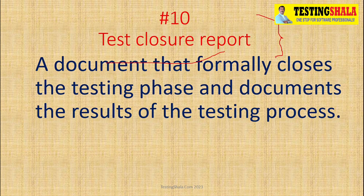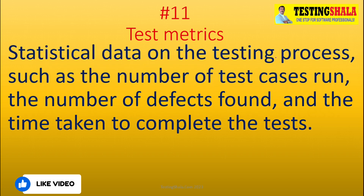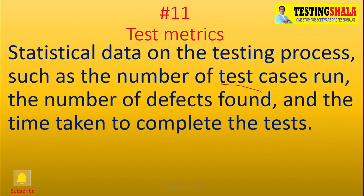The eleventh deliverable is the test matrix. The test matrix is very crucial for tracking overall testing processes and activities. We use it to measure various things in the software testing life cycle — such as number of test cases run, number of defects found, and time taken to complete execution. There can be 20 to 30 test metrics, and results are tracked for every sprint or release.